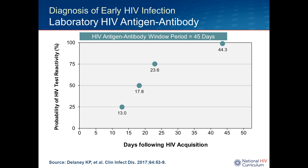A recently published study looked at what percentage of people would have a positive P24 antigen test after HIV acquisition. The y-axis shows the percentage of people with a positive test; the x-axis shows days after acquisition. Results show 25% would have a positive test by day 13, approximately 50% by day 18, 75% by day 23.6, and essentially 99 to 100% by day 44. This is where the window period term applies — the CDC defines that using the HIV antigen-antibody test, you can essentially rule out HIV after 45 days.